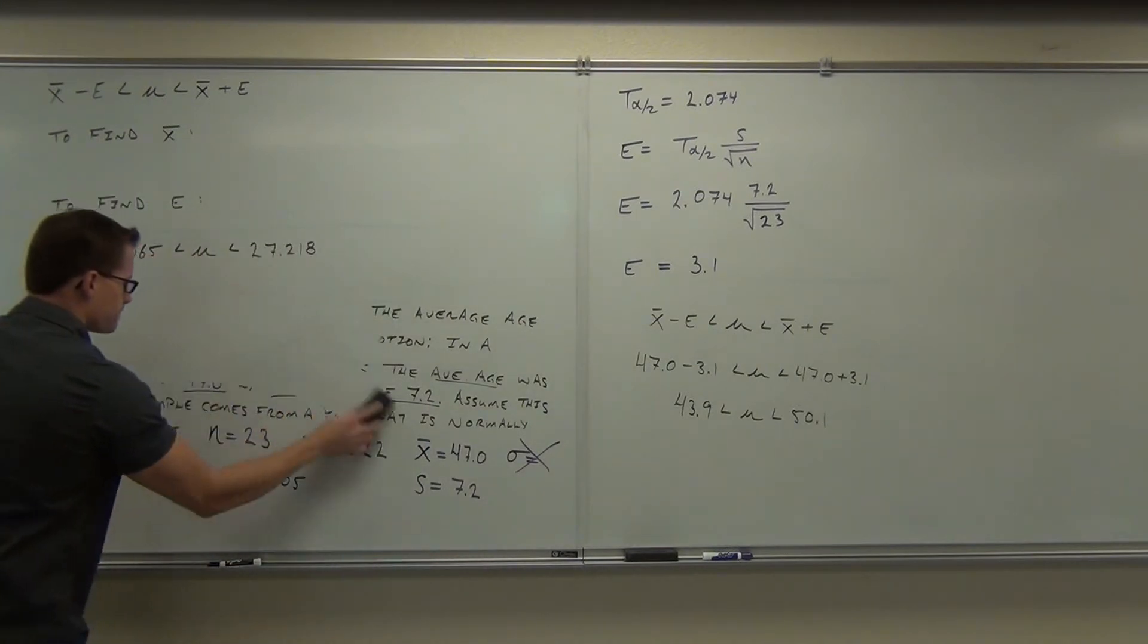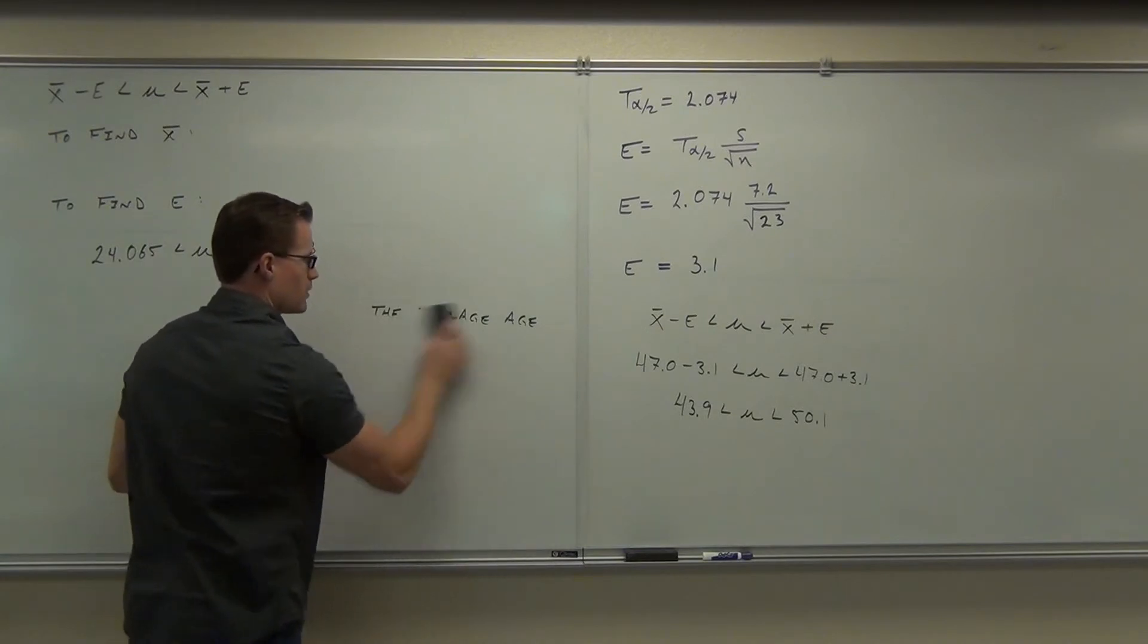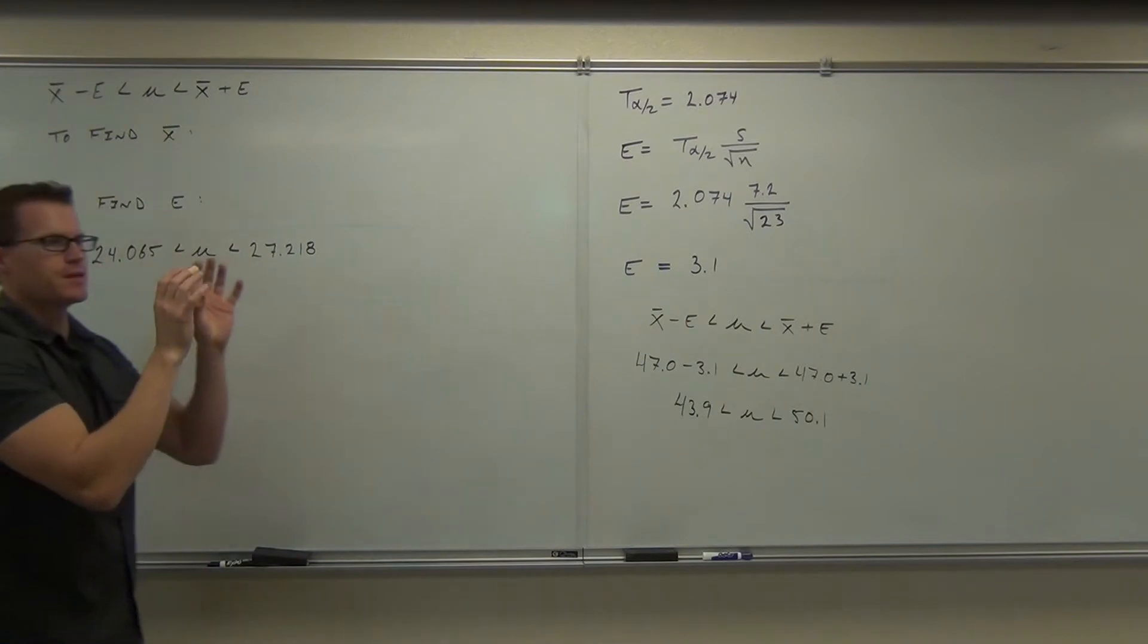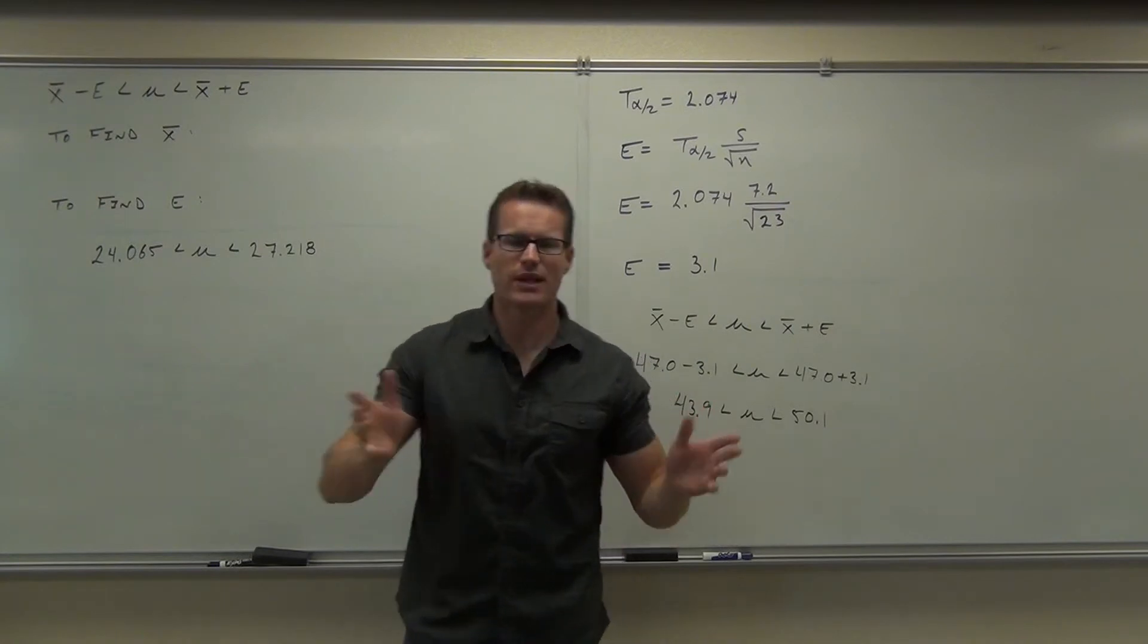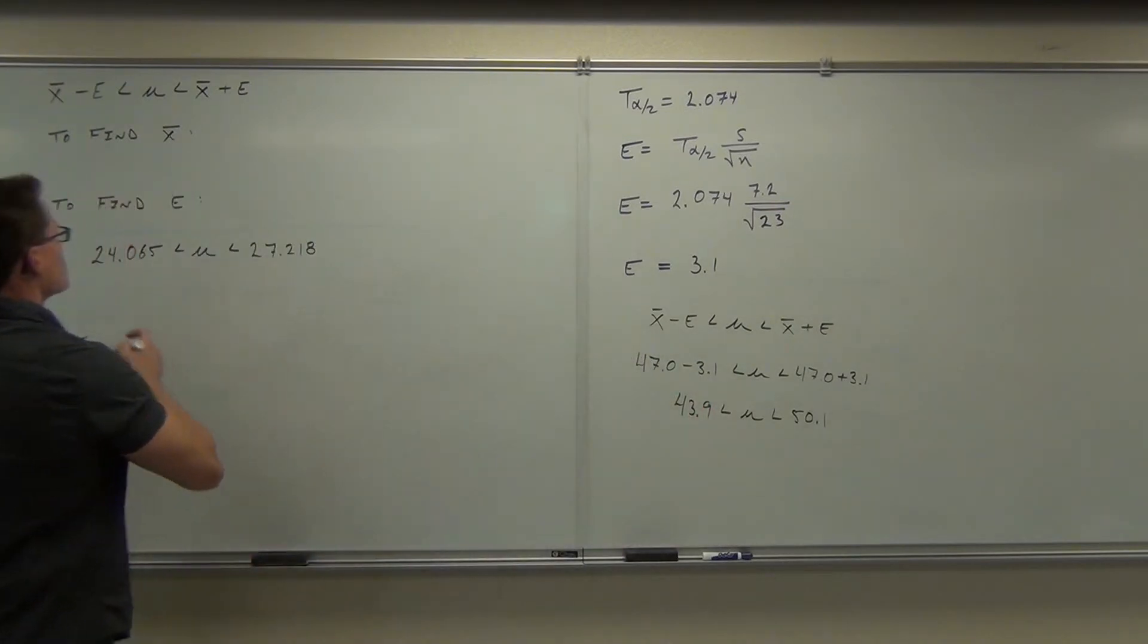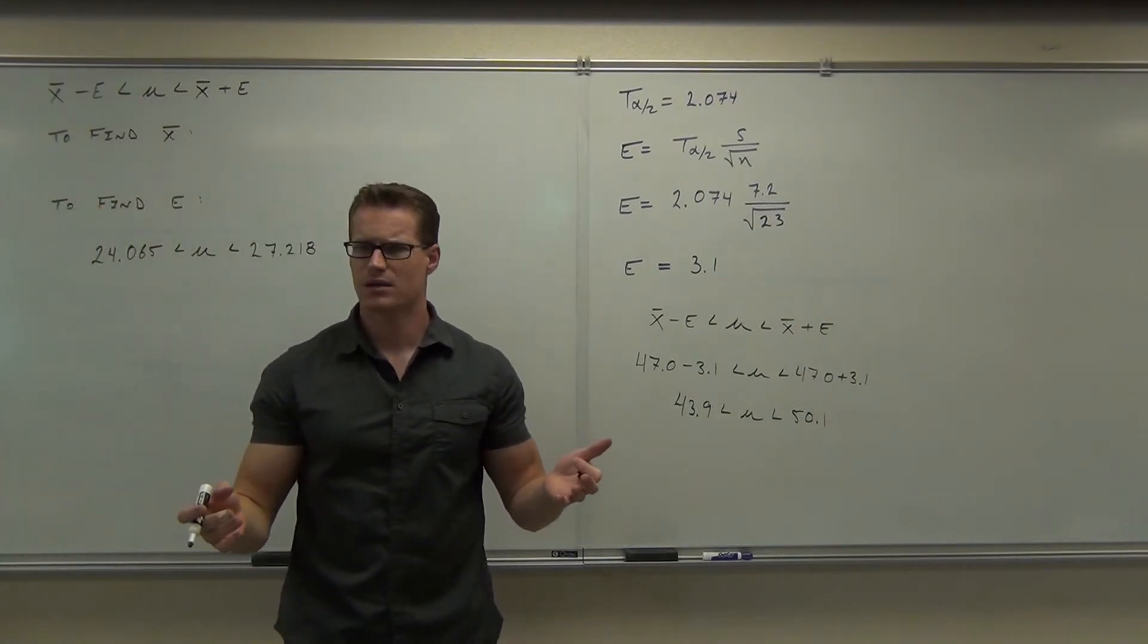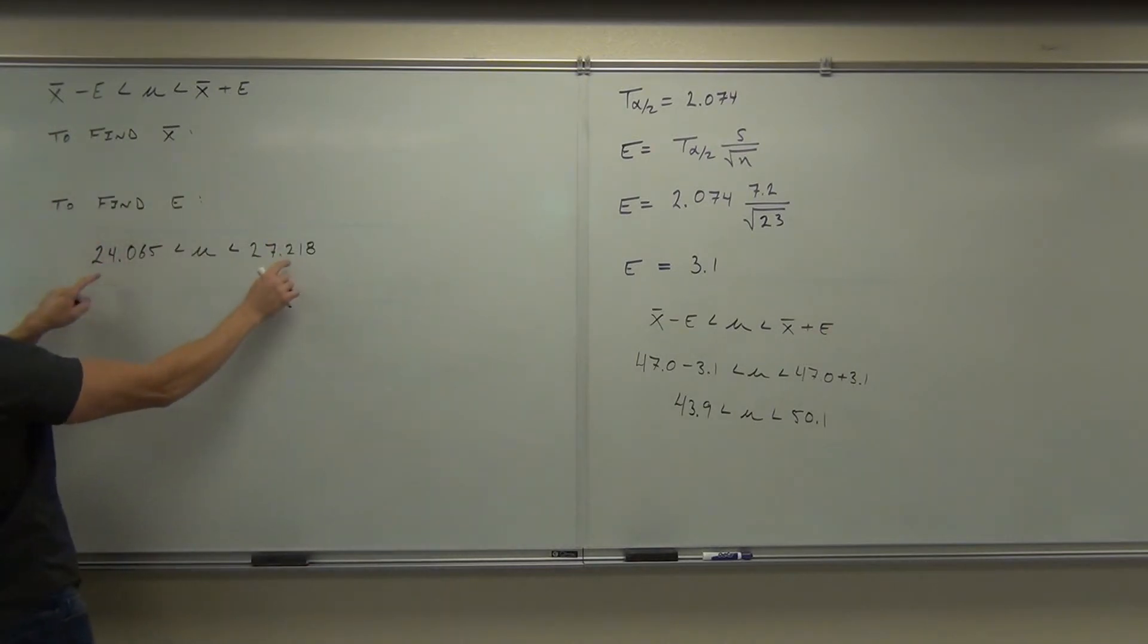Last thing we can do here before we do one final example. Just like before, when we had a confidence interval, you should be able to break that up and find the X bar like we found the P hat. And find the E like we found the E last time. To find X bar, the two bounds, add them together and divide them by two. Basically averaging them. Do you remember doing that with the P hat? To find the X bar. X bar is right in between these two numbers. So if I add them up and divide by two, if I average them, it's going to give me X bar.